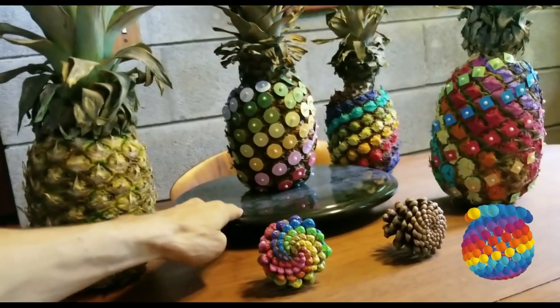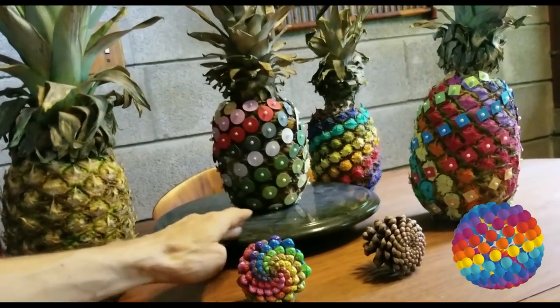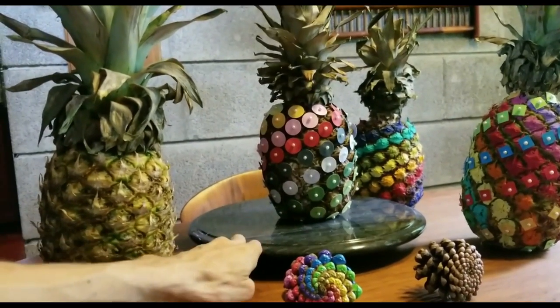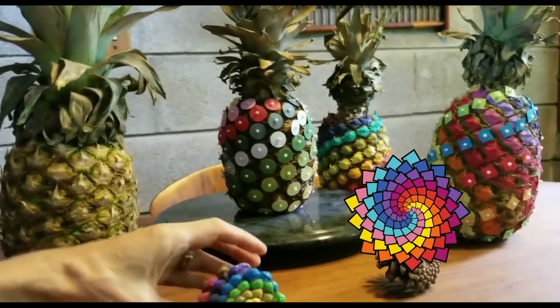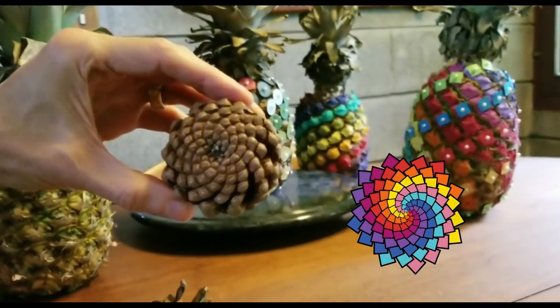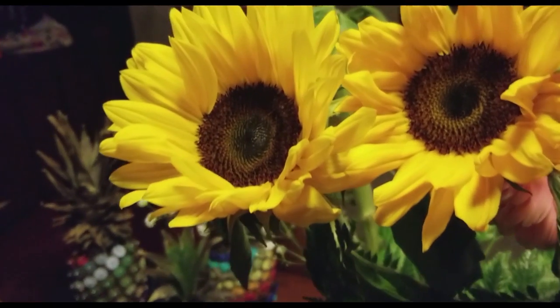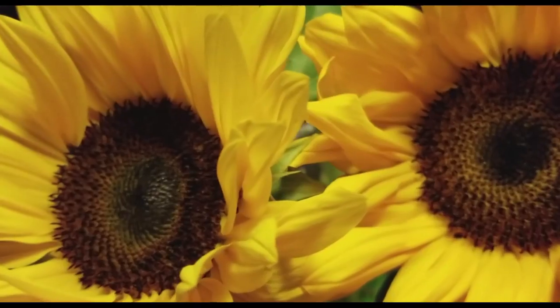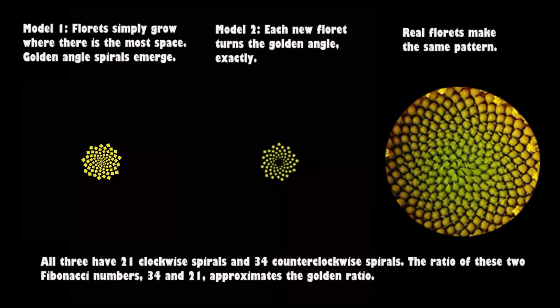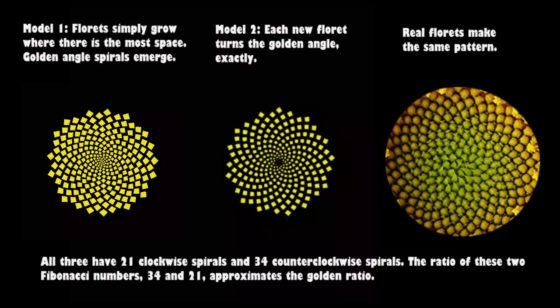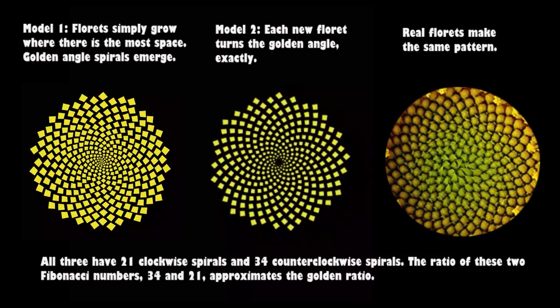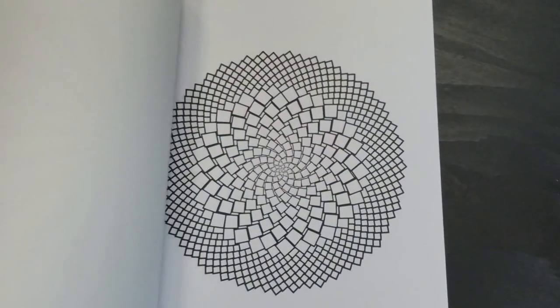We're surrounded by complex patterns that come from simple rules. We participate in nature's pattern formation when we paint the spirals, counting them, modeling them, simulating them. Very simple rules generate these beautiful spiral patterns. When florets grow outwards and naturally fill the space most efficiently, they naturally turn at the golden angle, forming these beautiful clockwise and counterclockwise spirals that we exploit in our coloring book.